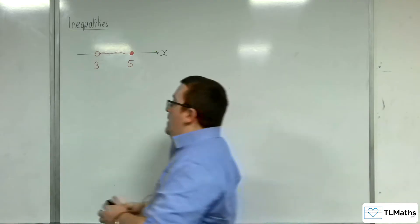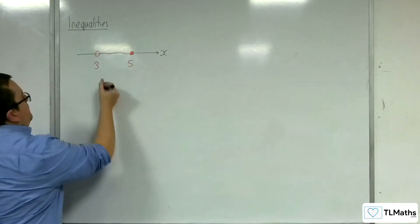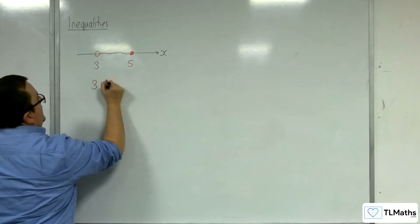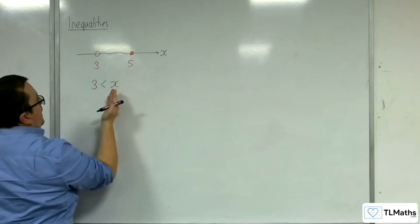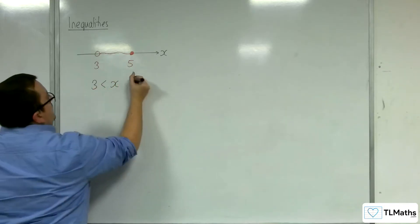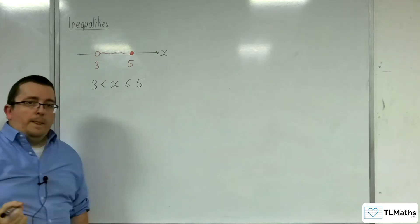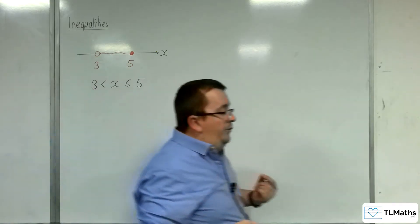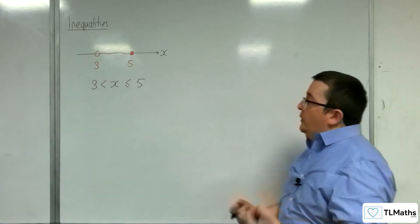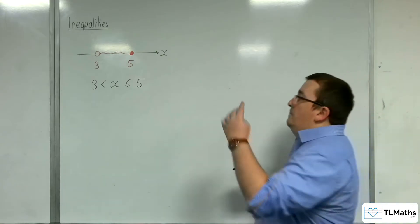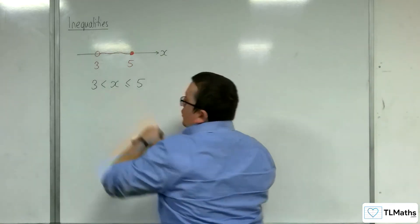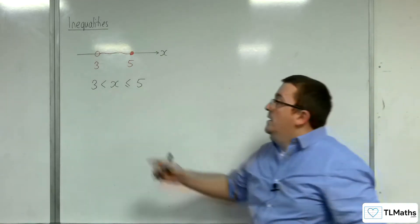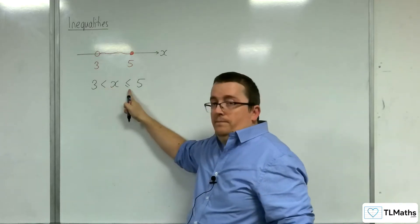Now, we have a way of writing that down as an inequality, which would be three is less than x, or x is greater than three, which is less than or equal to five. Please note that when we write down an inequality like that, the direction of the inequalities are going the same way, that we've got less than, less than.